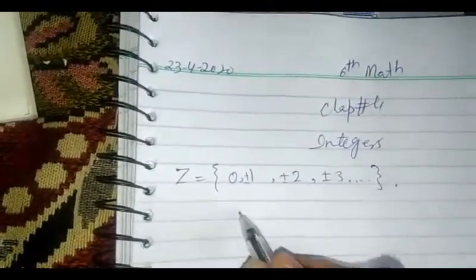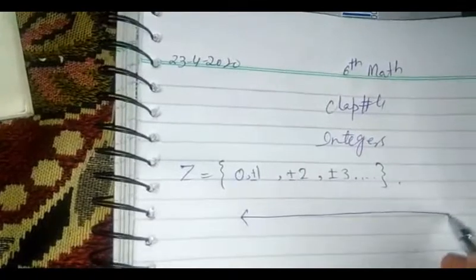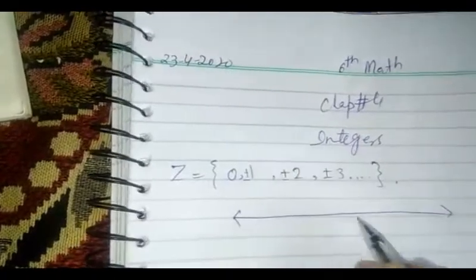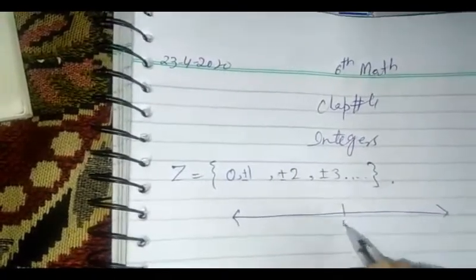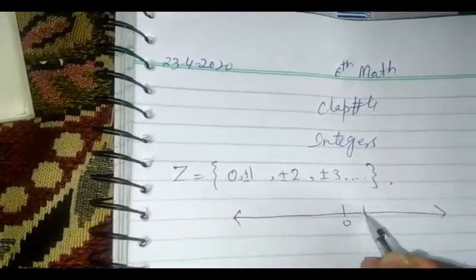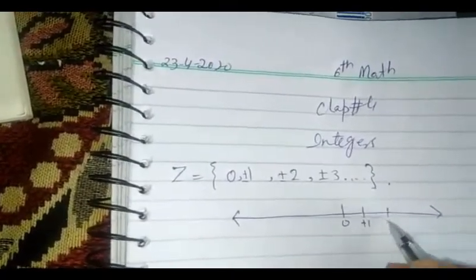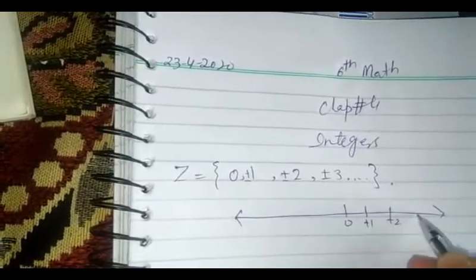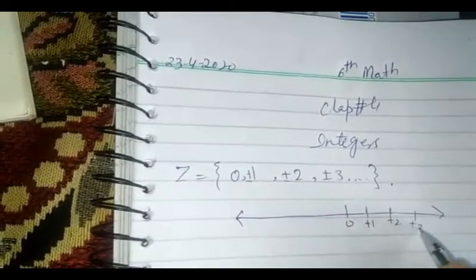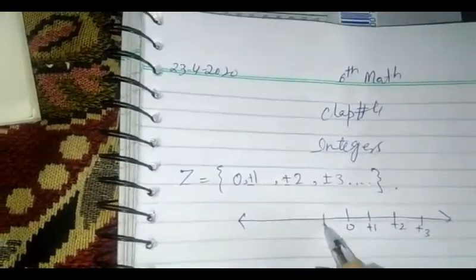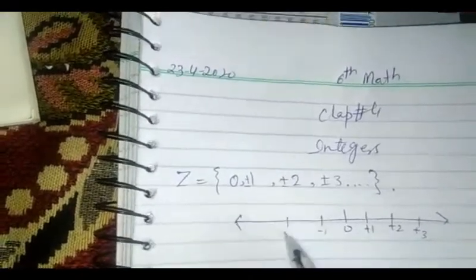On the number line, the positive integers are written on the right side and negative integers are written on the left side.